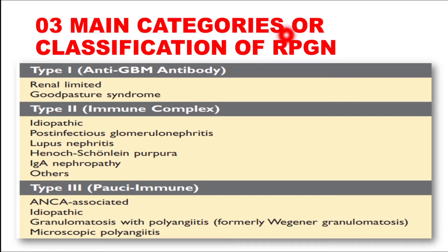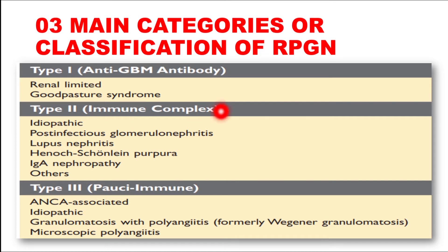There are three main categories or classifications of RPGN. Type 1 is anti-GBM antibody induced RPGN, type 2 is immune complex mediated RPGN, and type 3 is pauci-immune RPGN.